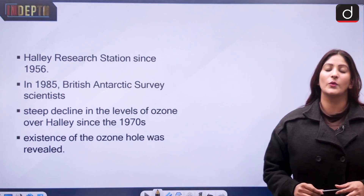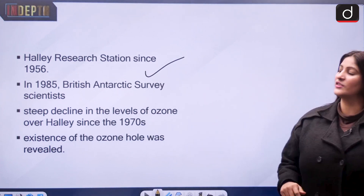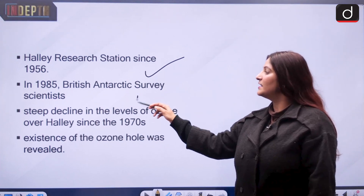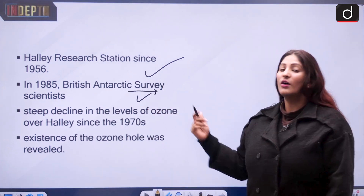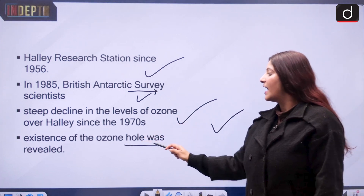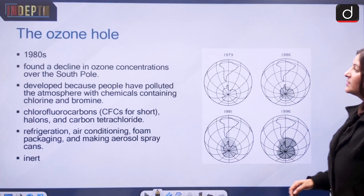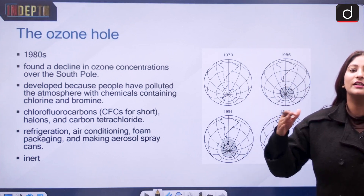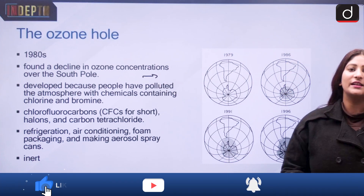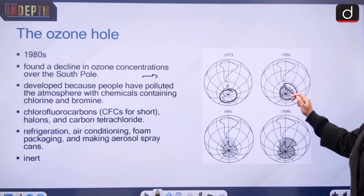The Halley Research Station has been monitoring the ozone layer since 1956. In 1985, British Antarctic Survey scientists found a steep decline in ozone levels over Halley since the 1970s — this is where the discovery of the ozone hole occurred. From the early 1980s onward, scientists recorded a significant decline in ozone concentration specifically over Antarctica, the South Pole, observable from 1979 through 1986, 1991, and 1996.